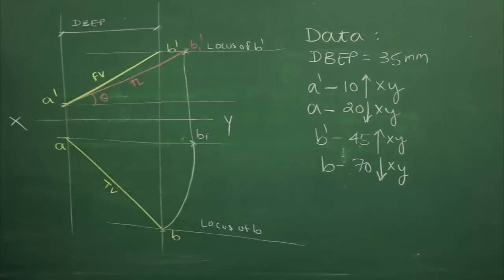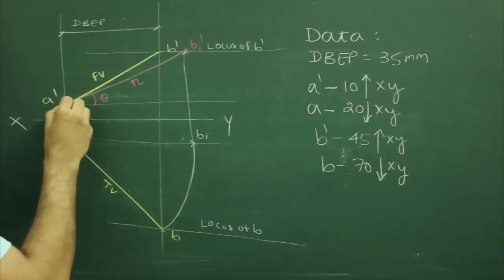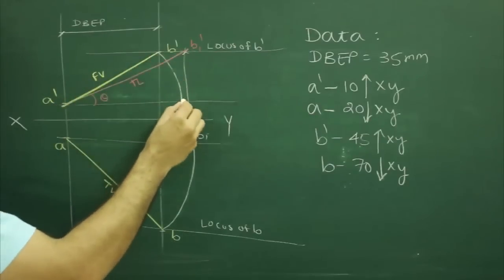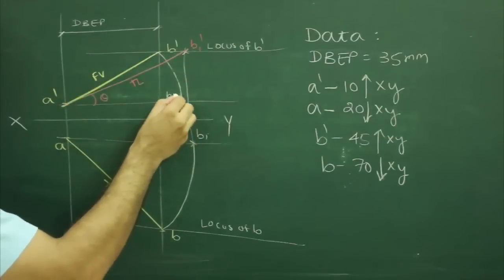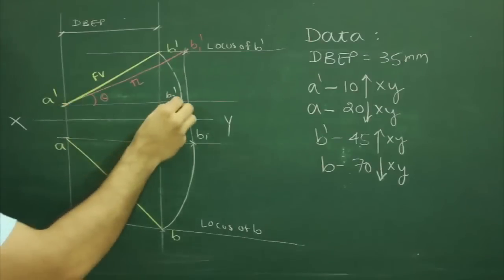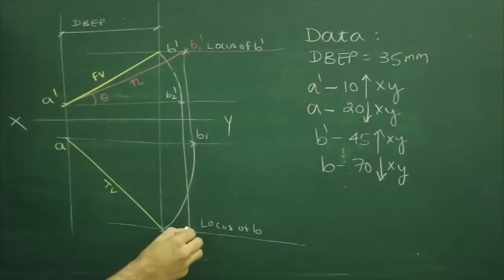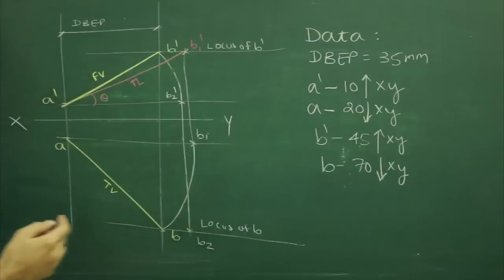Now we can do the same procedure. We can rotate A'B' keeping point A' fixed. Rotate till here, it will become B2'. Then we will project this point down till wherever it will cut locus of B, mark that point as B2.